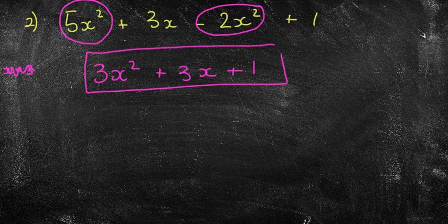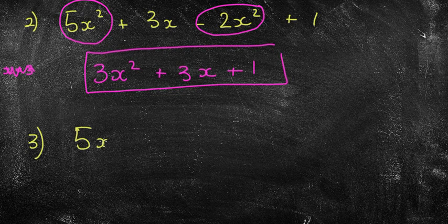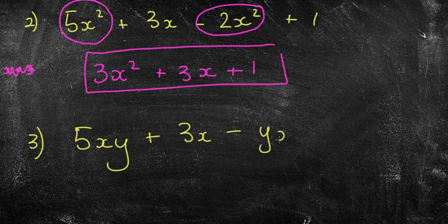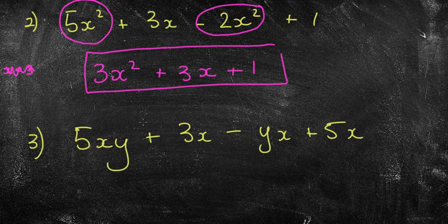Okay one last one for adding and subtracting. Often people get this one wrong. 5xy plus 3x minus let's say yx plus 5x. Now I'm going to circle like terms. So I've obviously got the plus 3x and I've got the plus 5x.